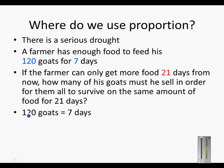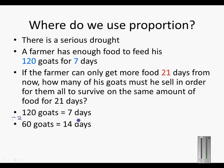So 120 goats — you can keep that for seven days. If we halve the amount of goats, so we divide the amount of goats by two, we can get double the amount of days. So we can have 60 goats survive for 14 days.